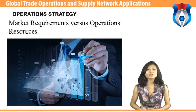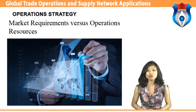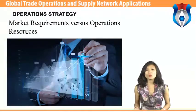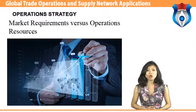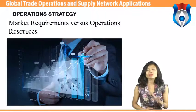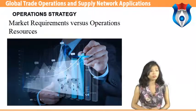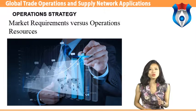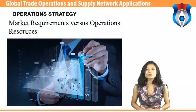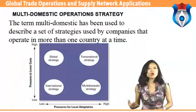The market requirements perspective starts from the common-sense notion that any operation strategy should reflect what the organization is trying to do in its market. Companies compete in different ways: some compete primarily on cost, others on the excellence of their products or services, others on high levels of customer service, and others on customizing products and services to individual customer needs. The operations function must therefore respond by providing the capabilities which allow it to perform appropriately to satisfy market requirements.